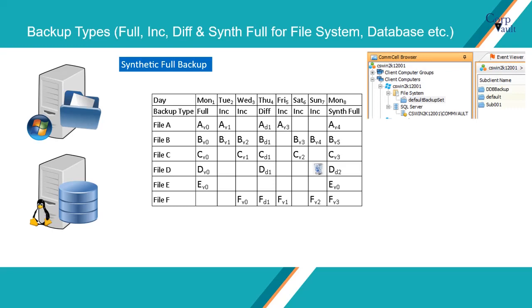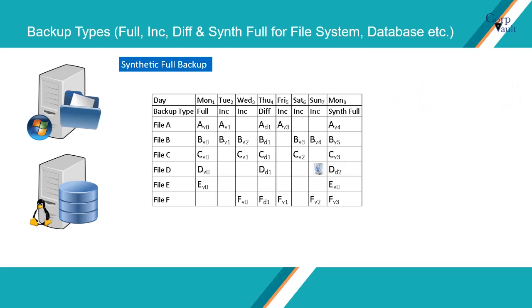Unless the 'run incremental backup' option is selected in Commvault. Running an incremental backup immediately before the synthetic full ensures that any new or recently changed data is included in the synthetic full. Running an incremental backup immediately after the synthetic full ensures that any new or recently changed data since the backup performed is backed up by the incremental.